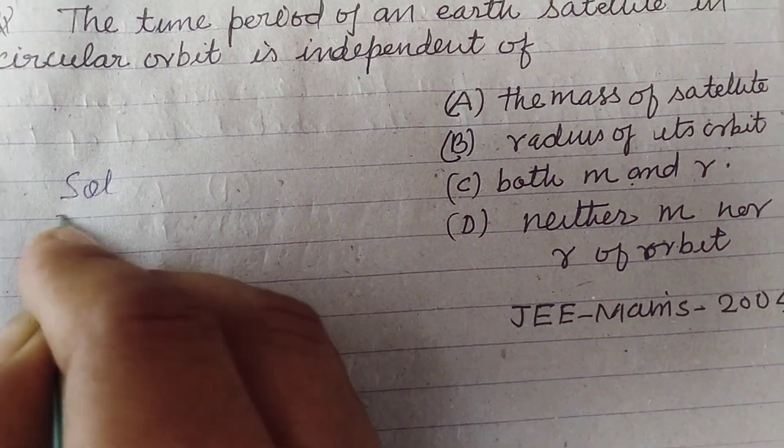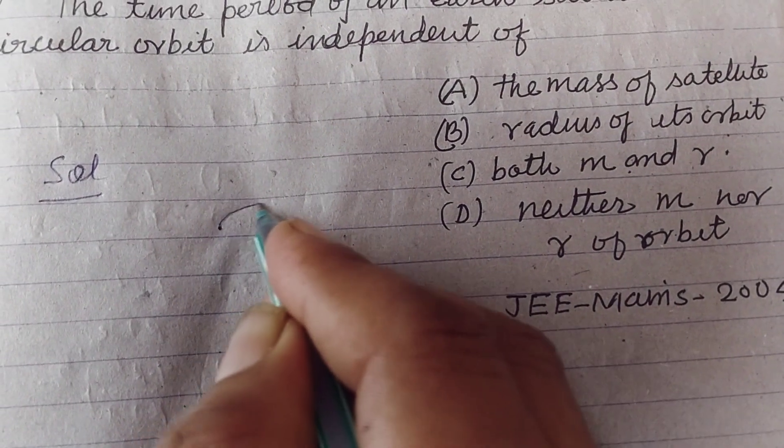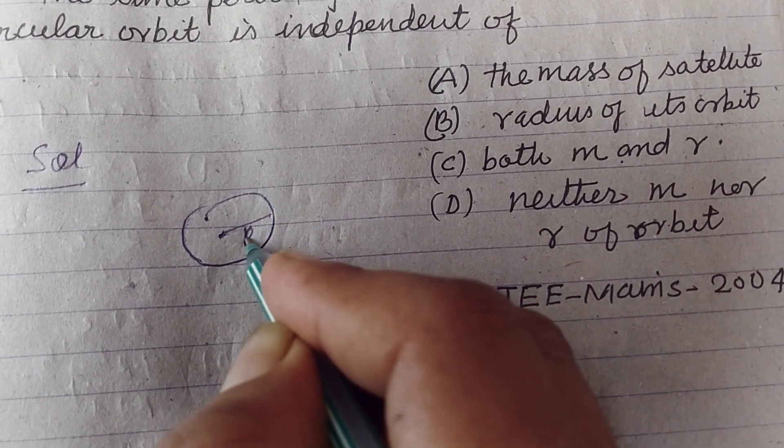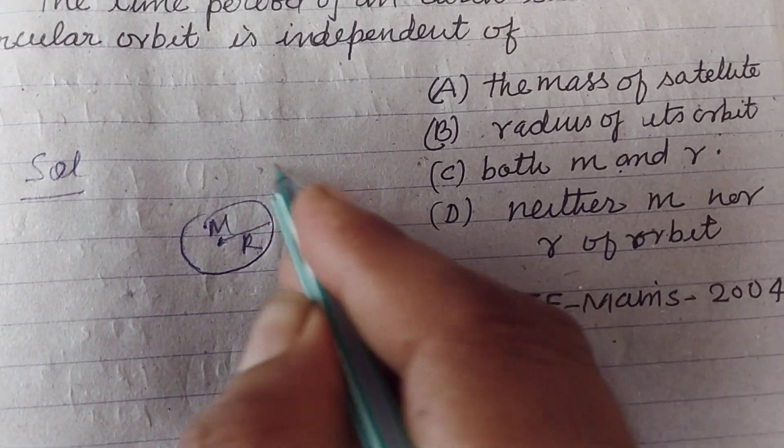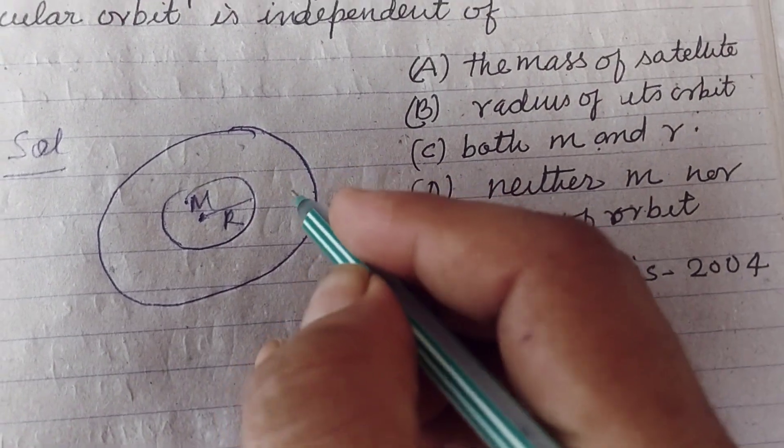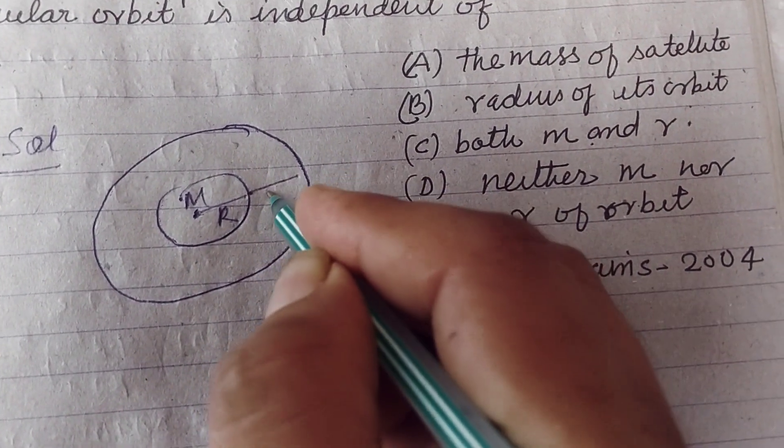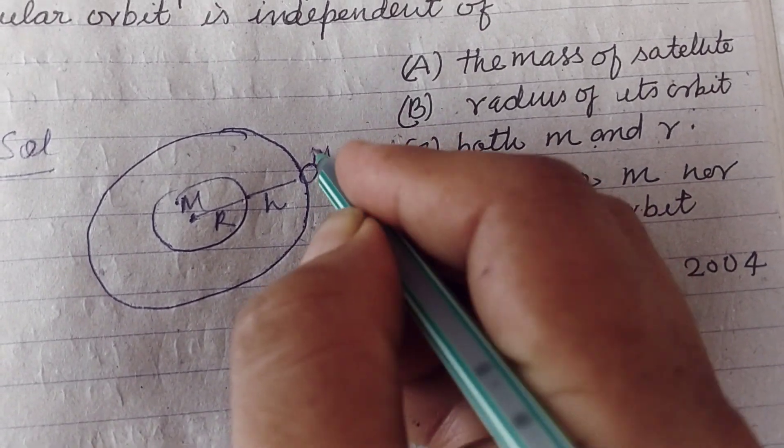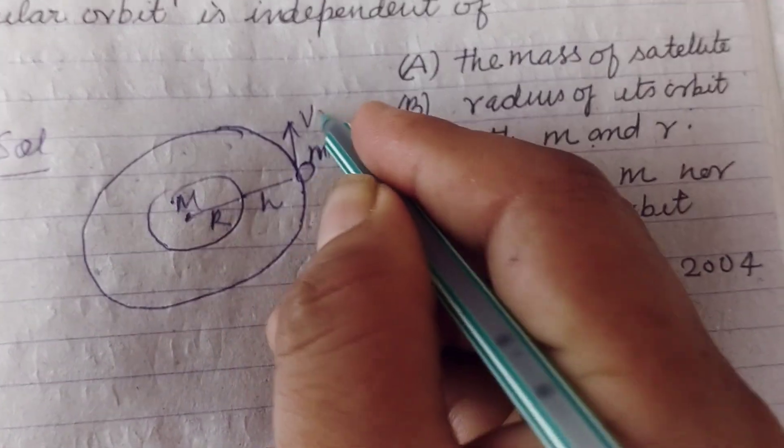So student, you know that a satellite is moving - this is Earth with radius R, mass M, and a satellite is moving in orbit at a height h from Earth's surface having mass small m with velocity v₀.